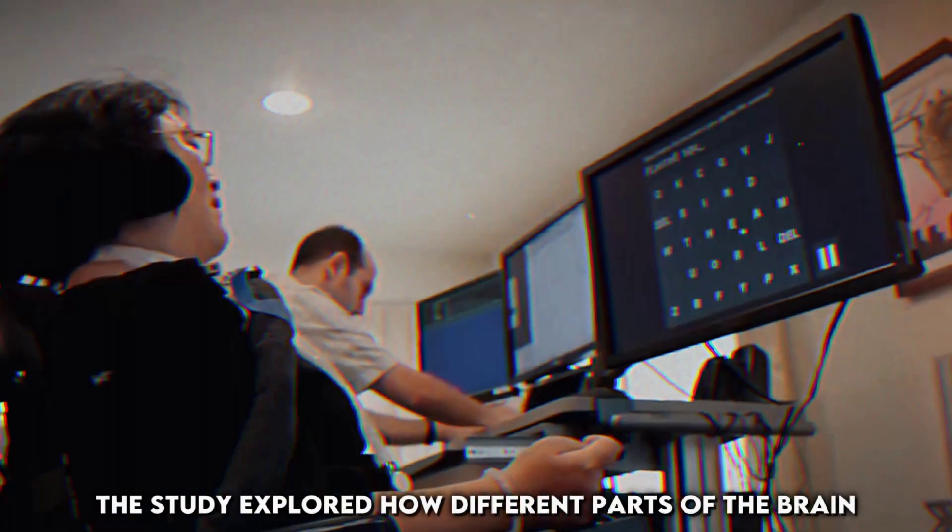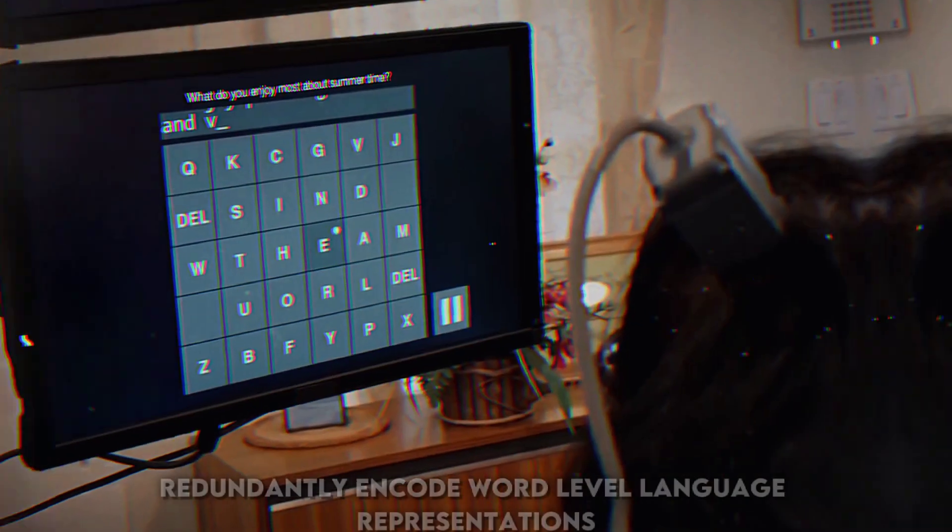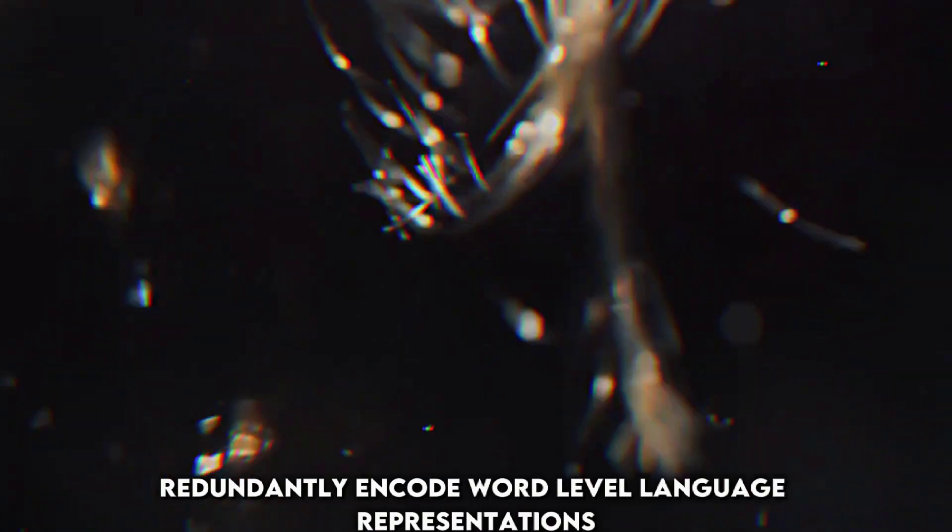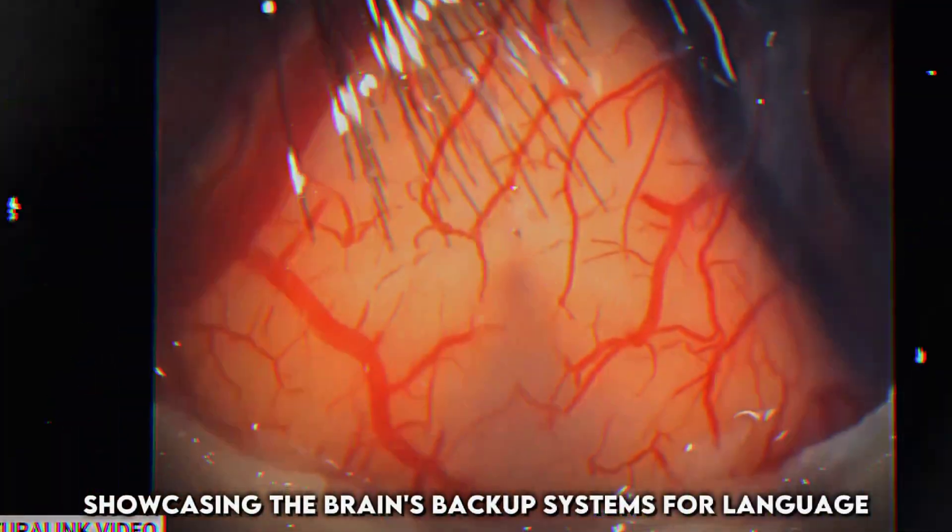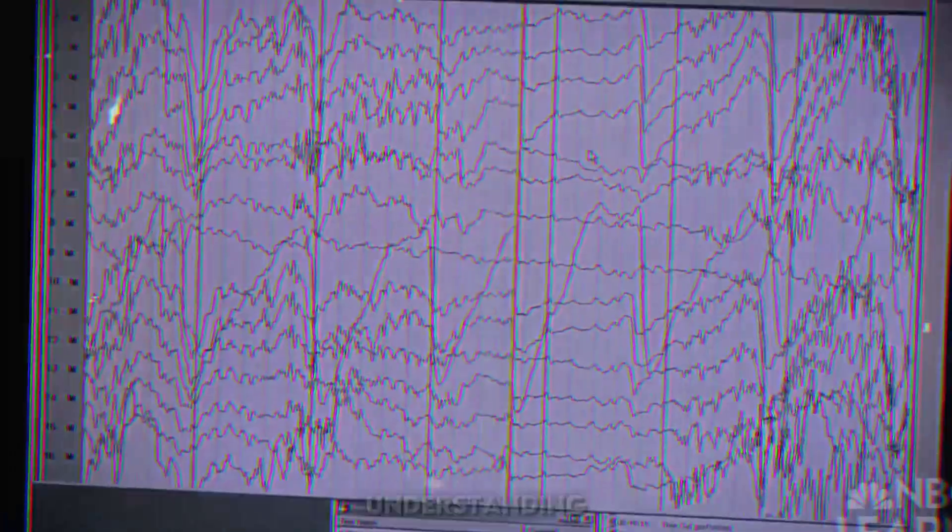Furthermore, the study explored how different parts of the brain redundantly encode word-level language representations, showcasing the brain's backup systems for language understanding.